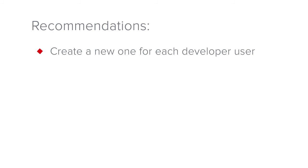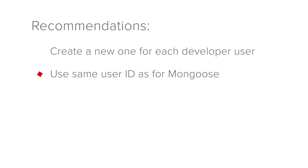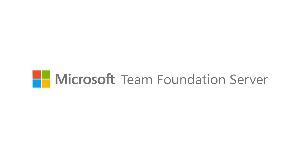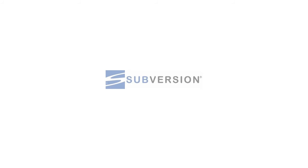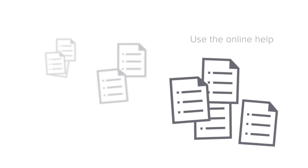We recommend that you create additional user IDs on your source control system — one for each developer who will be authorized to create and customize forms. This makes it easier to keep track of who is doing what in the development databases. We should also mention that at least when using VSS, we recommend that the VSS user ID be the same as for the Mongoose user developer who will be using it, though the password should be up to the individual user. Team Foundation Server and Subversion both have their own requirements for accessing the source control repository, so consult the appropriate documentation for those systems and the Mongoose online help.